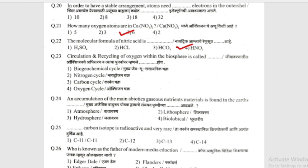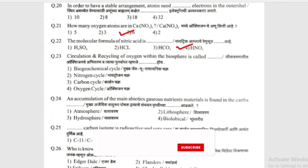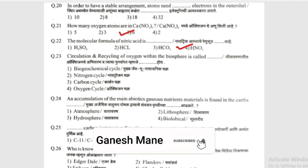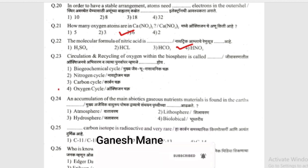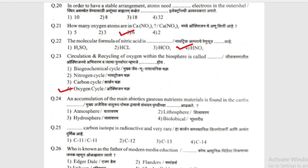The next question: the circulation and recycling of oxygen within the biosphere is called what? The answer is the oxygen cycle. The second option was nitrogen, and the third was carbon.